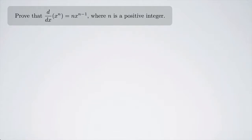Prove that d/dx of x to the n equals n times x to the n minus 1, where n is a positive integer. This is known as the power rule, and there are several different ways to prove it. It's a little bit of a tricky proof, so bear with me here.